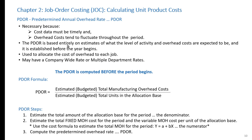The predetermined overhead rate is computed before the period begins and is based entirely on estimates of the expected level of activity and overhead costs. The formula has the estimated total manufacturing overhead cost in the numerator and the estimated total units in the allocation base in the denominator. The steps are: 1) estimate the total amount of the allocation base for the period; 2) estimate the total fixed manufacturing overhead cost and the variable manufacturing overhead cost per unit of the allocation base; 3) use the formula y = a + bx to estimate the total manufacturing overhead; then use the PDOR formula to compute the predetermined overhead rate.